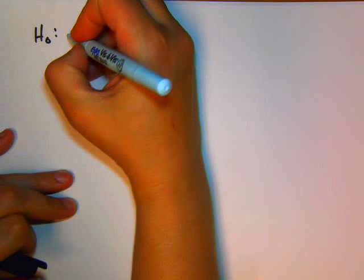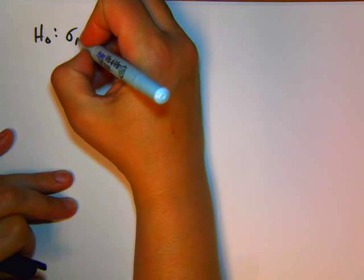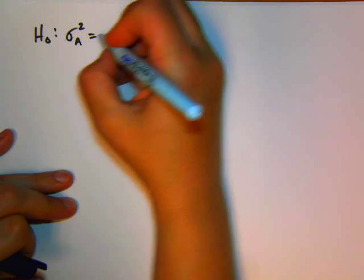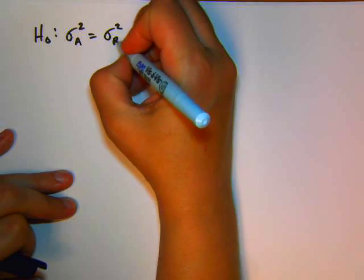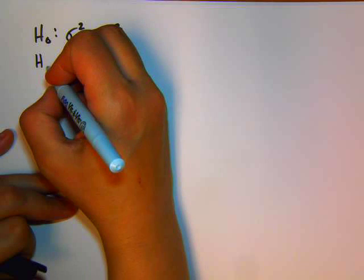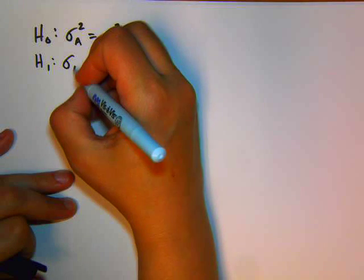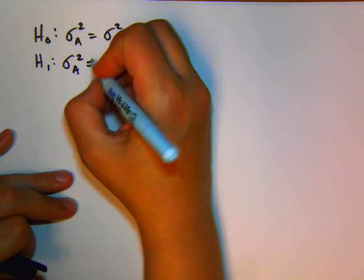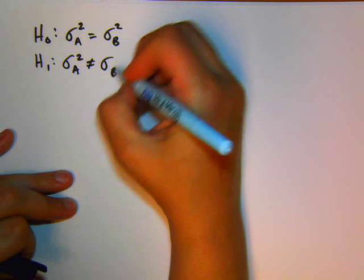We also have here that alpha equals 0.05. We set up our hypothesis statement. We have our null hypothesis is that the variance for brand A equals the variance for brand B. And the alternative hypothesis would be that the variance for brand A does not equal the variance for brand B.